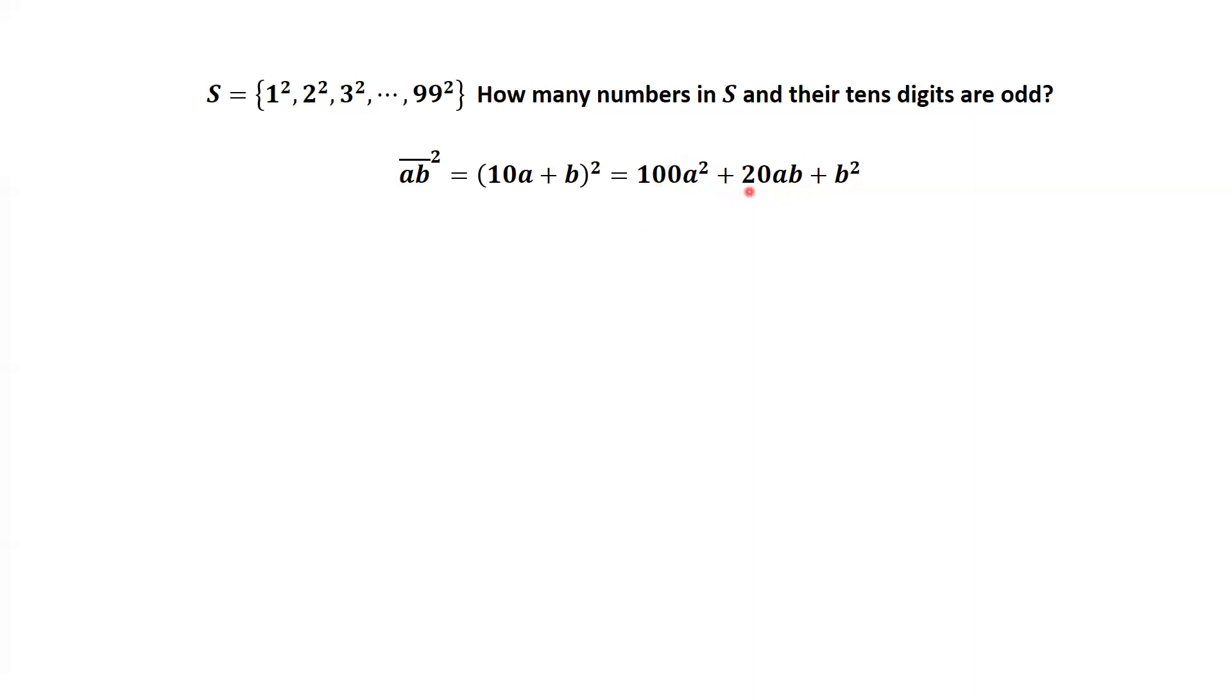Similarly to this part, if A or B, one of them is zero, this part is zero. Zero-zero, tenth digit is even. If both are not zero, the tenth digit is two times something, which is even. This implies the tenth digit of 100A square and 20AB both are even. We have the important result. The tenth digit of AB square is odd if and only if the tenth digit of B square is odd. This means the left-hand side and B square have the same tenth digit even-odd property.